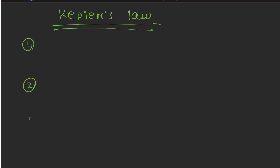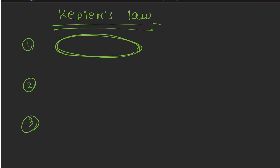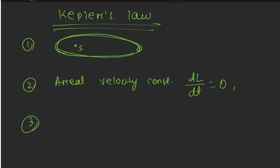Kepler's 1st law states that planets travel in elliptical orbits. Kepler's 2nd law states that areal velocity is constant — dL/dt = 0 — meaning net torque is zero and angular momentum remains constant.